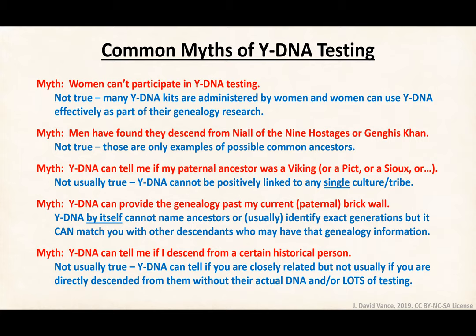The next myth is that men have found they descend from the Irish King Niall of the Nine Hostages, or Genghis Khan. There are studies finding that a group of men descend from one common ancestor thousands of years in the past — that's true. But no one has tied those conclusively to any past figure. Niall of the Nine Hostages and Genghis Khan have been proposed as possible ancestors, but there's no real evidence linking them to the lines they were originally connected to. Yet people still do believe this.